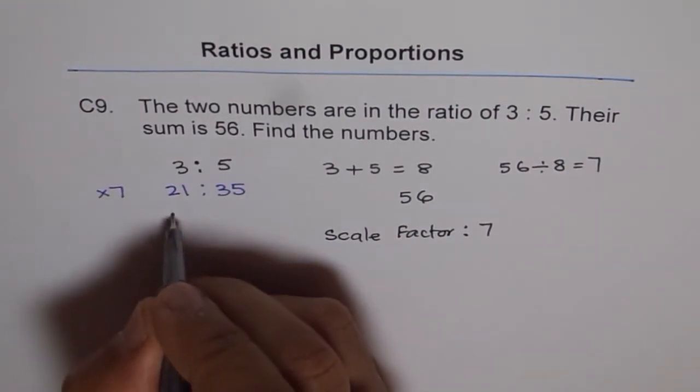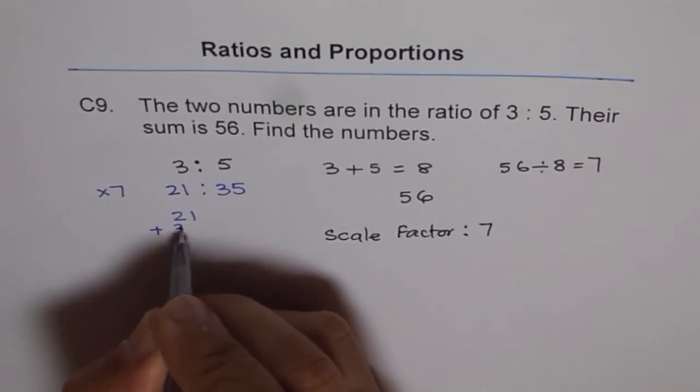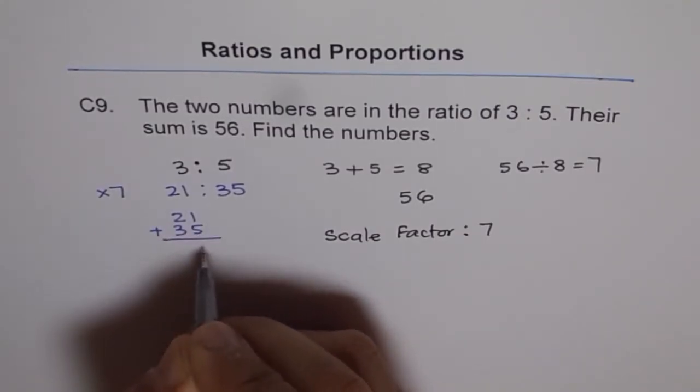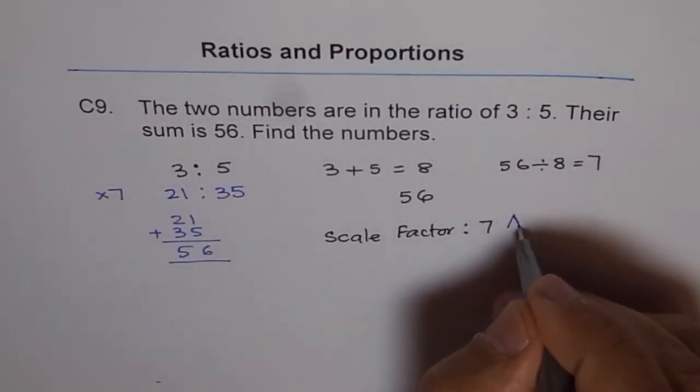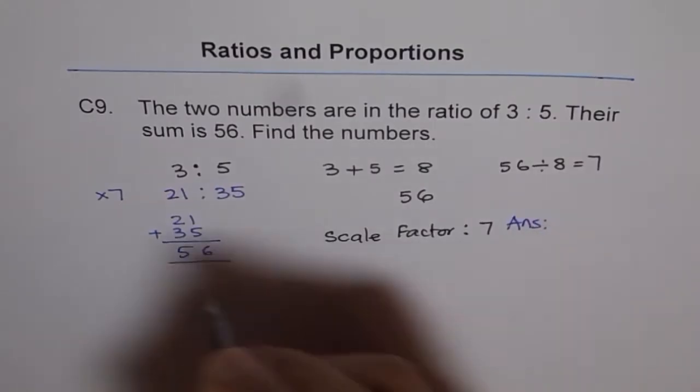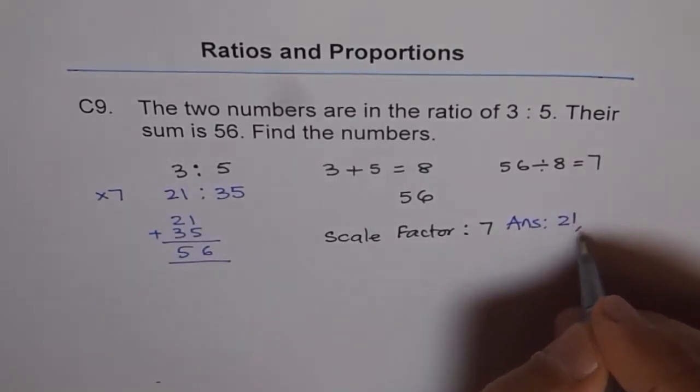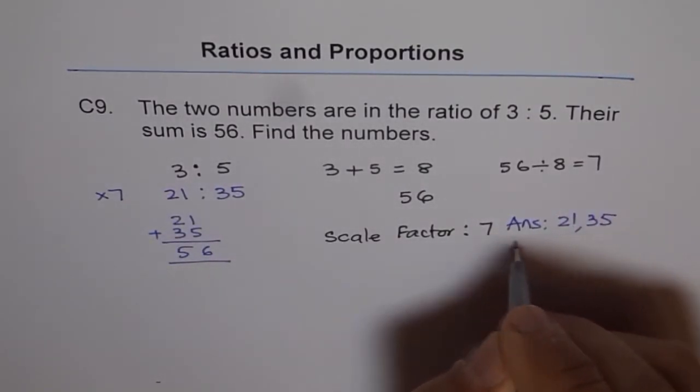Let's check the answer. So 21 plus 35, what do we get? We get 56. That is correct. Therefore we can say that our answer is that the numbers are 21 and 35.